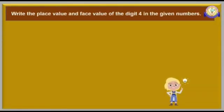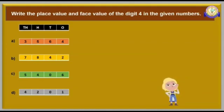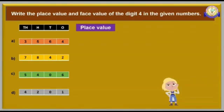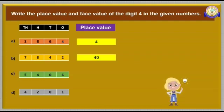Look at this example. Here you need to write the place value and face value of the digit 4 in the given numbers. First, identify the places of digit 4 in the given numbers. The place value of a digit is decided by its position. In 3564, the digit 4 is in the 1's place; therefore, the place value of 4 is 4. In 7842, the digit 4 is in the 10's place; therefore, the place value of 4 is 40. In 5406, the digit 4 is in the 100's place; therefore, the place value of 4 is 400. In 4201, the digit 4 is in the 1000's place; therefore, the place value of 4 is 4000.